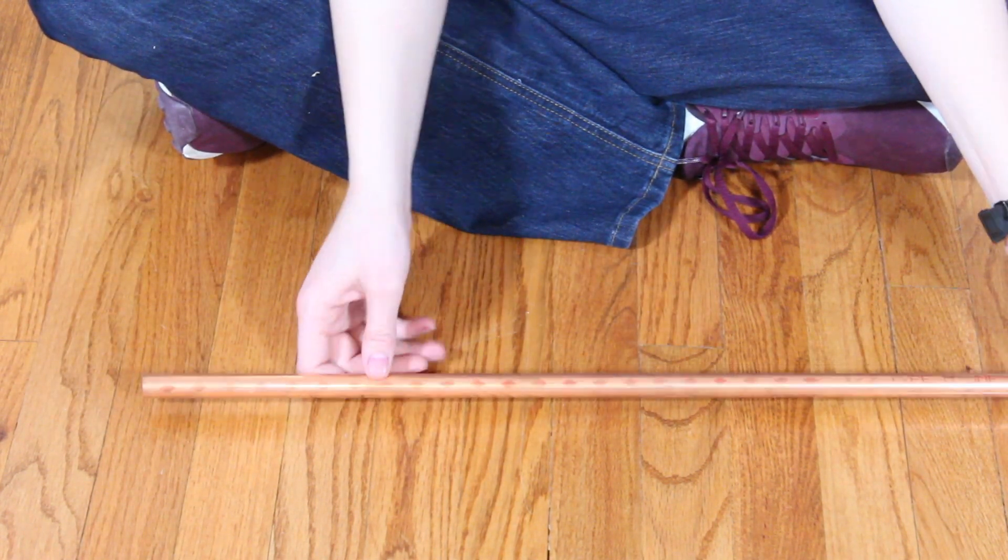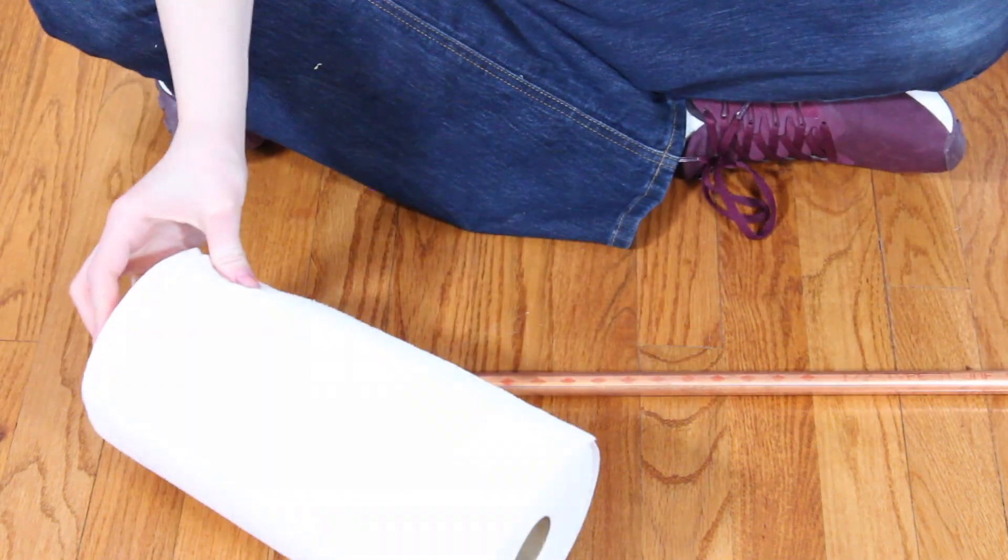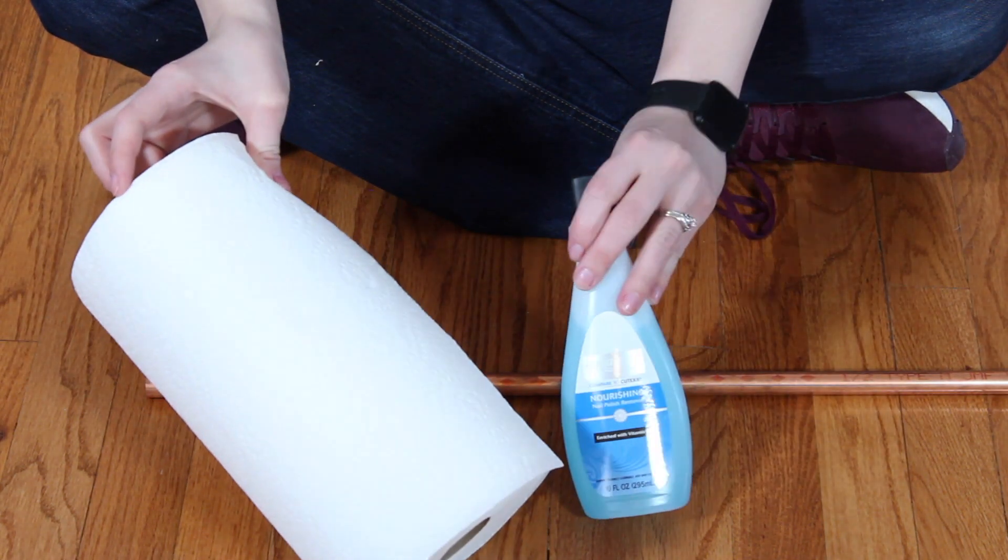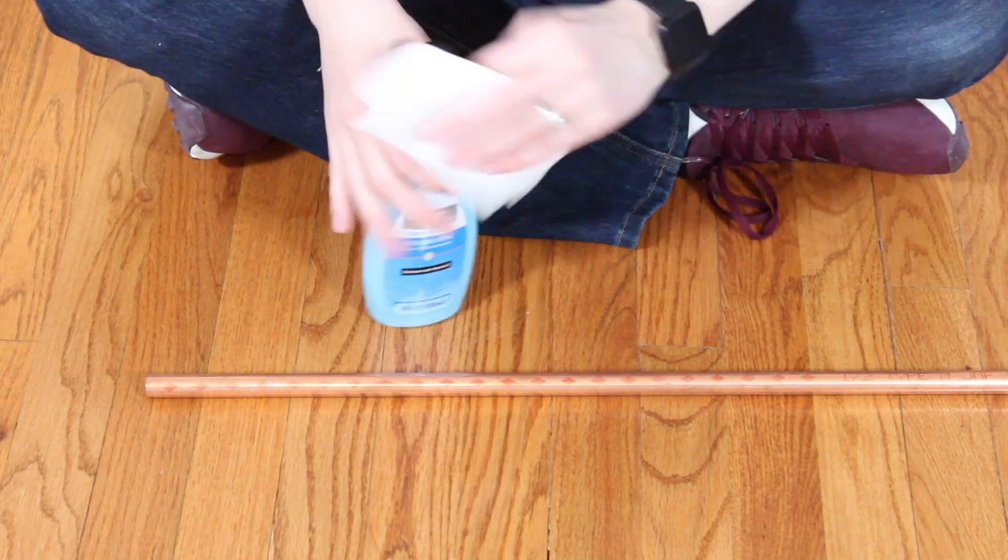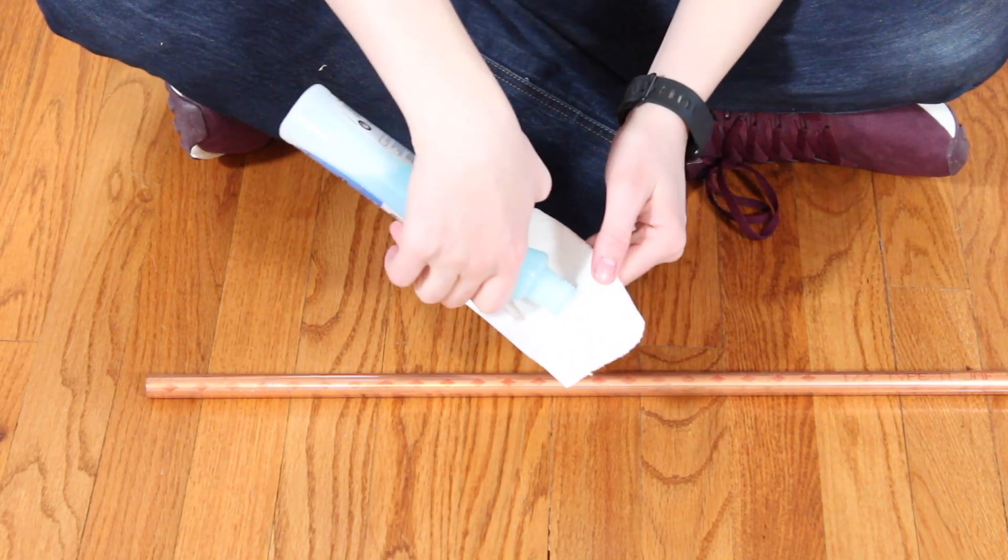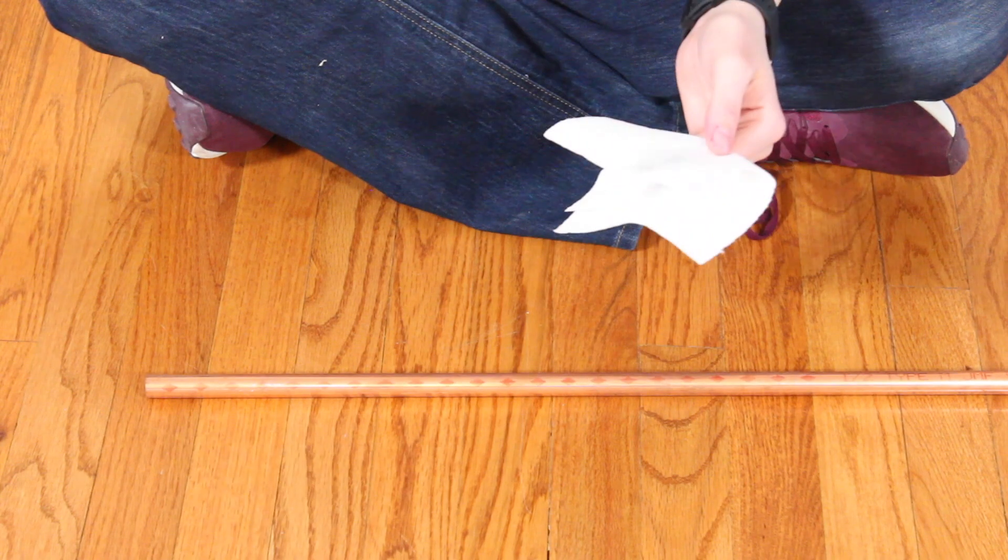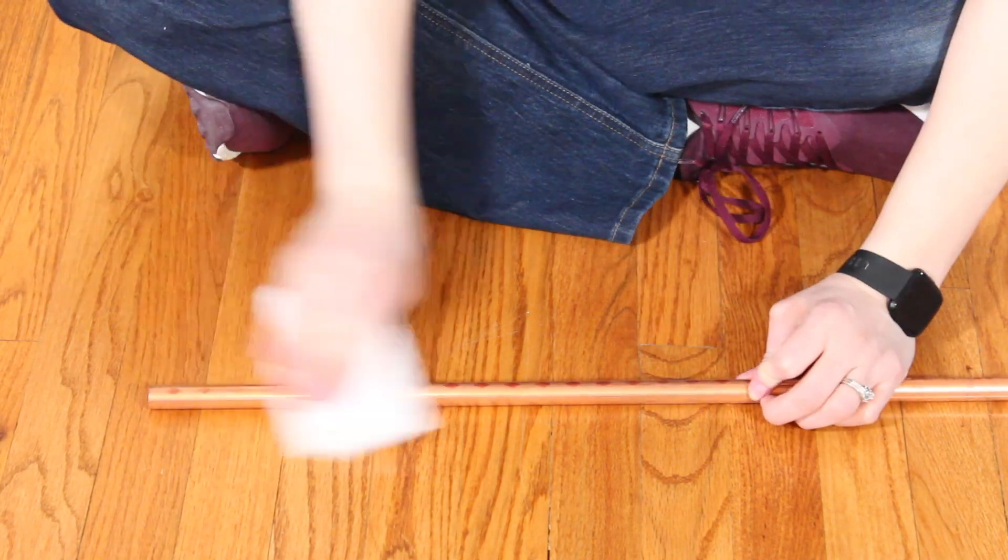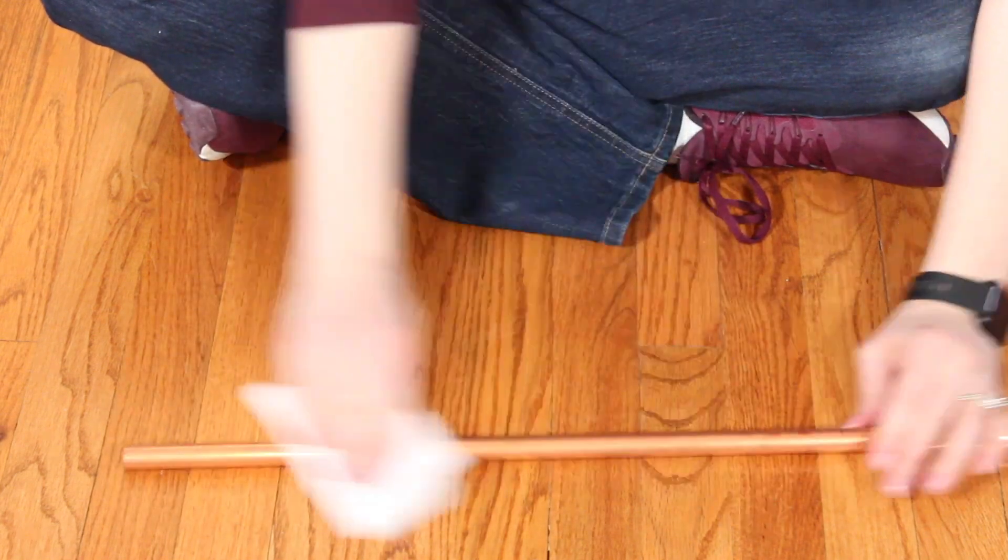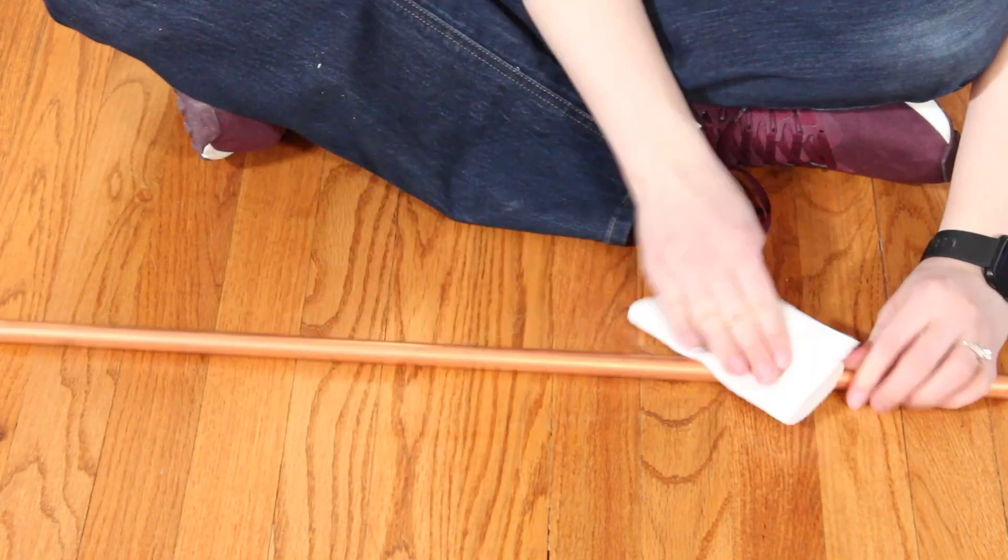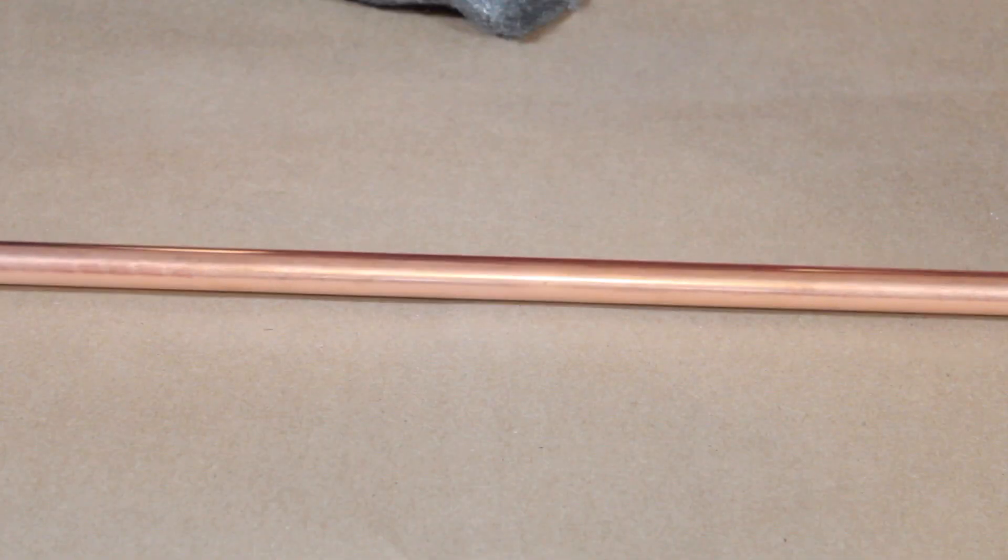Now, when you get the pipes, there will probably be ink on the pipes, and so I used some paper towels and some nail polish remover, which has acetone in it, to remove that ink. But I did find that there was some ink that wouldn't quite come off, and it doesn't get the tarnishes out. So I went over all my pipes first with the acetone-based nail polish remover, and then I came back with some really fine steel wool.